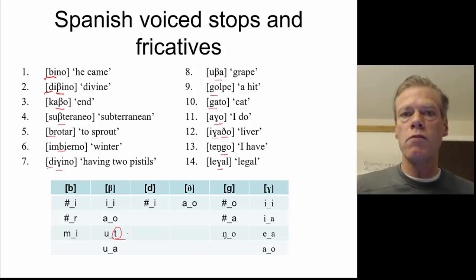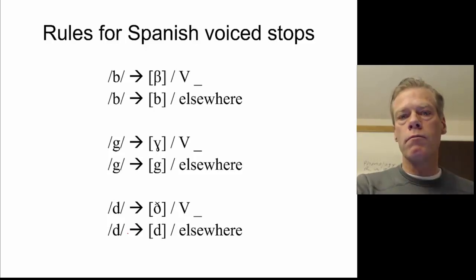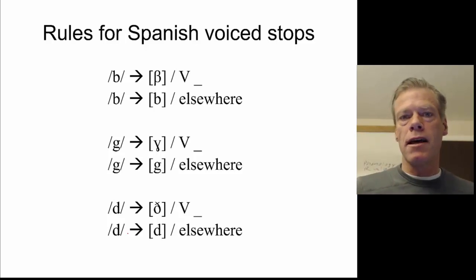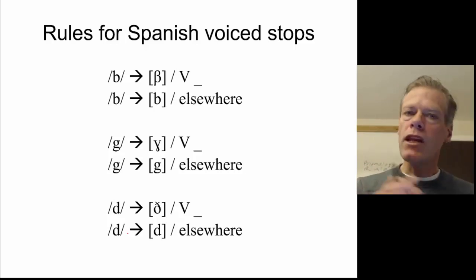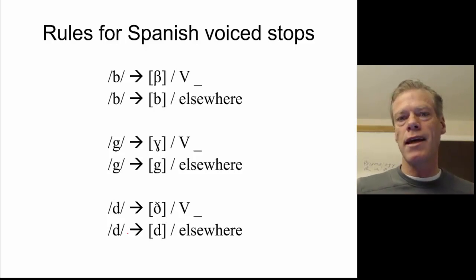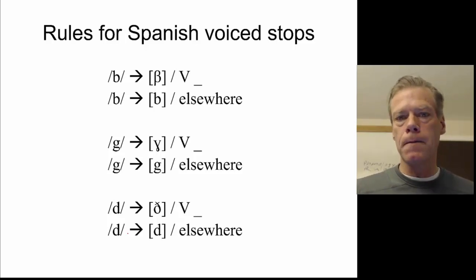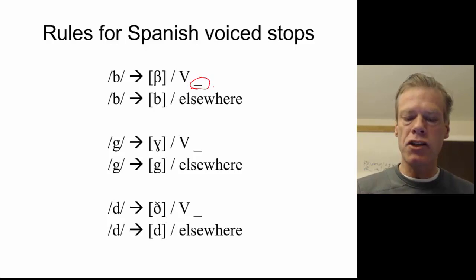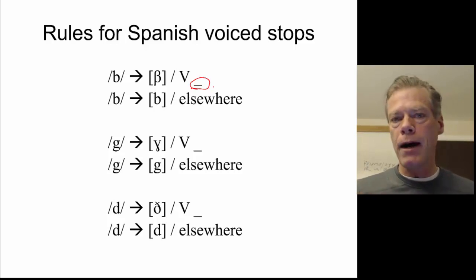So now we're in a position to make a hypothesis. We can go through and tackle these phone by phone. We're going to assume that underlyingly they're stops, because the stops seem to be in that elsewhere position — it's the fricatives that are specified. So we say, for example, that B becomes V when it's preceded by a vowel. That capital V means a vowel, and this line means where we find our target. So B becomes V after a vowel, and B is B elsewhere.